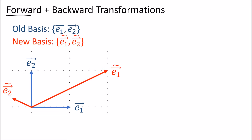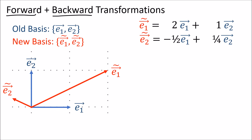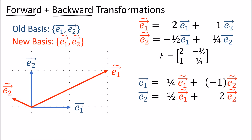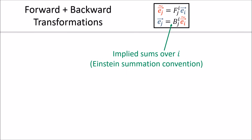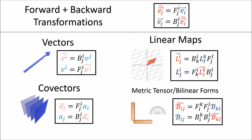The secret to solving this problem is the forward and backward transforms. When we have an old basis and a new basis, the forward transform is the set of coefficients we use to build the new basis vectors out of the old ones, stored in a matrix called F. The backward transform is the set of coefficients to build the old basis vectors out of the new ones, stored in a matrix called B. B is the inverse matrix of F. If we know these transforms for a pair of basis vector sets, we automatically know how to transform the components of any tensor by applying some number of forward and backward transforms depending on the contravariant and covariant transformation rules.